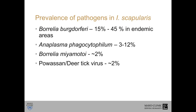In addition to Borrelia burgdorferi, there are other organisms contained within the body of the tick that can also be transmitted. Some are bacteria, some are viruses, some are parasites. In the black-legged tick, we have Anaplasma phagocytophilum found in 3–12% of ticks in endemic areas, Borrelia miyamotoi — one of those relapsing fever Borrelia — and Powassan or deer tick virus, as well as Babesia microti. The bottom line is that a single tick bite can result in multiple infections, so prevention of tick bites is key.